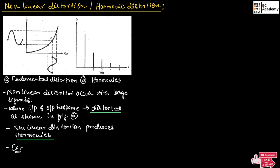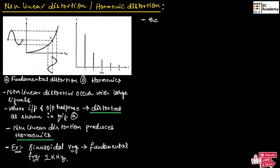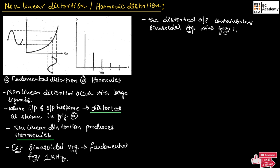For example, if we consider a sinusoidal voltage with a fundamental frequency of 1 kHz, then the distorted output contains sinusoidal voltages with frequencies 1 kHz, 2 kHz, 3 kHz, and so on. These harmonics are shown in figure B.